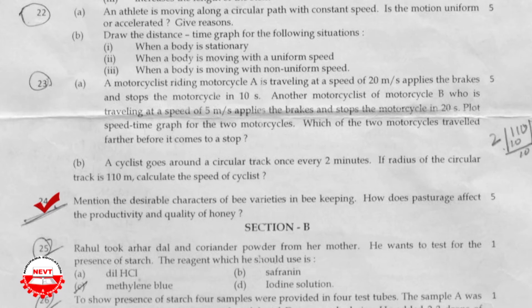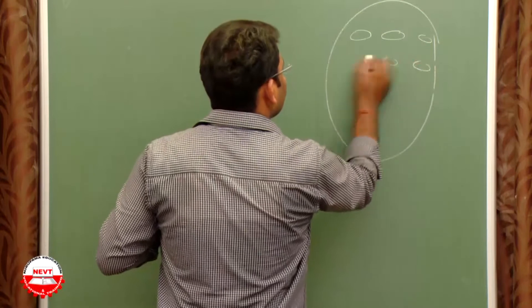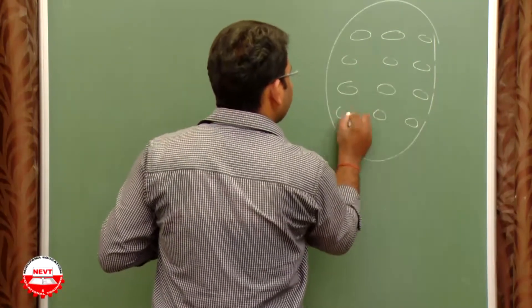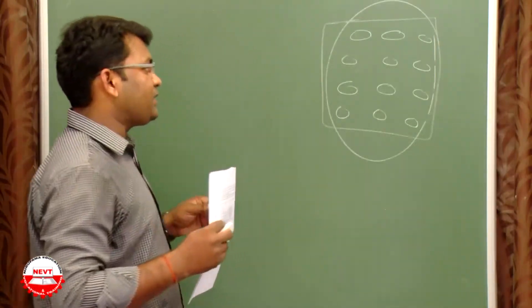Question on beekeeping: desirable characteristics of bee varieties and how apiculture affects productivity. There are three varieties of honey bees. Apiculture involves providing a proper environment for bees to reproduce, stay, and store honey. Technical procedures maintain honey quality, bees are protected from external threats, and can grow and reproduce to meet honey demand.